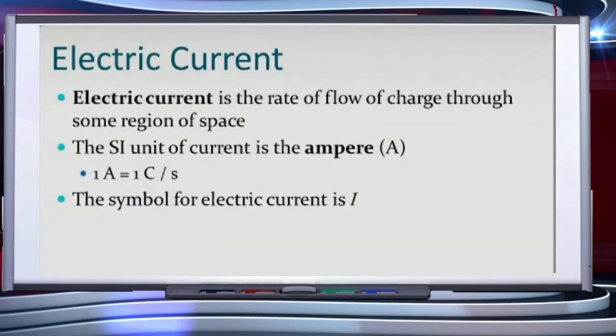Let us understand what is electric current. Flow of electric charge through a conductor constitutes an electric current. In circuits using metallic wires, flow of electrons constitutes the flow of electric current. Or we can say electric current is defined as the time rate of flow of electric charges. The SI unit of current is the ampere and which is denoted by capital A. The symbol for electric current is I.